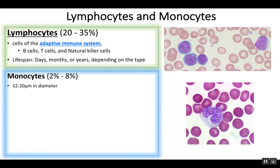B lymphocytes produce antibodies. Antibodies are proteins that help attack the pathogens. Whereas T cells attack pathogens a little bit differently — they will actually kill your own cells when they are infected with viruses. We'll get into the adaptive immune system when we get to that section of the course.